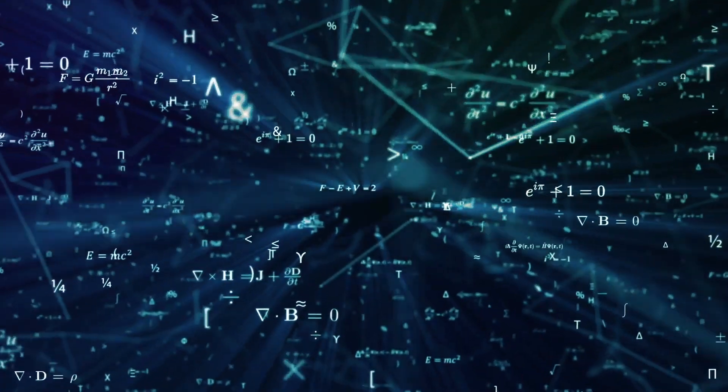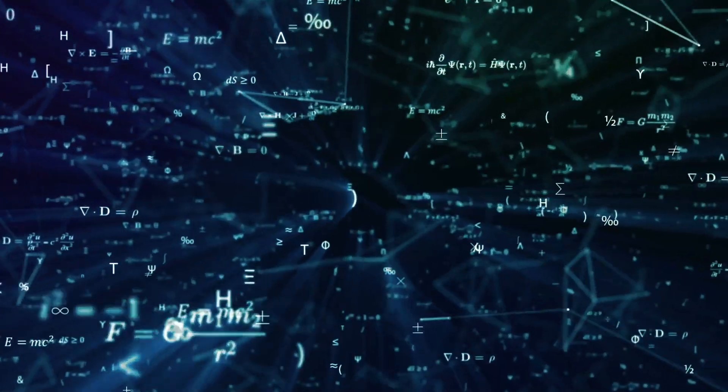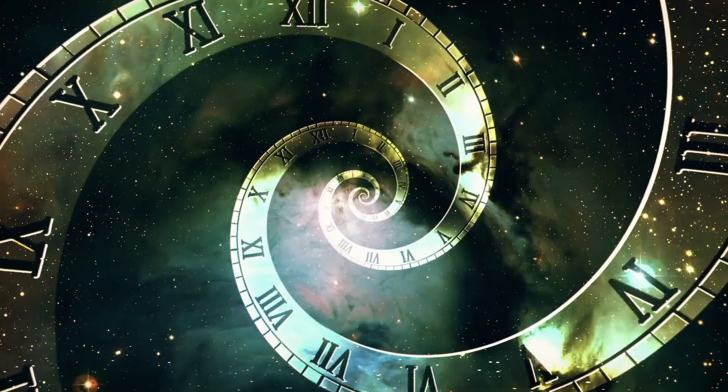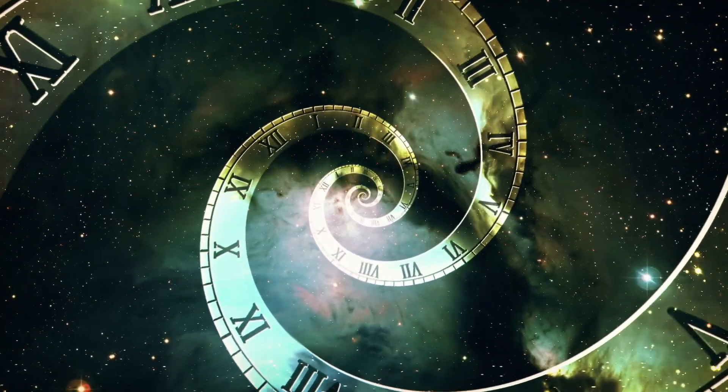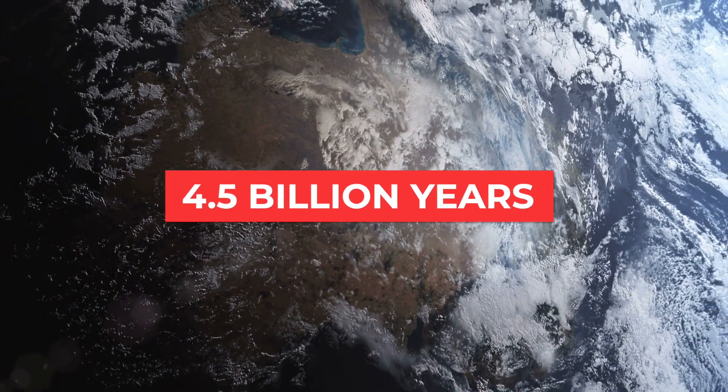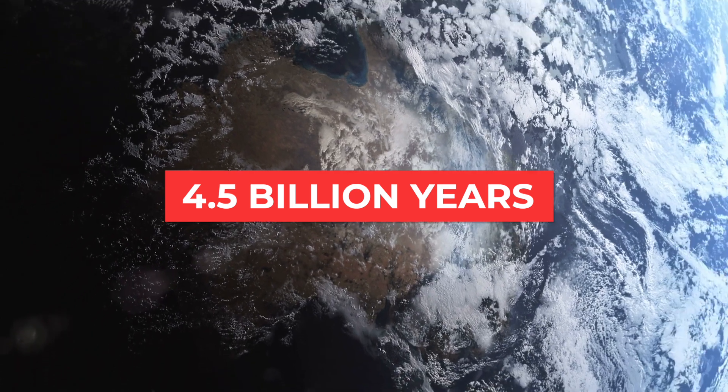In order to understand how the theories work, it is first necessary to take a look at the current state of research into the origin of the Earth. How old our planet is, is still disputed. The scientific consensus, however, is that about 4.5 billion years ago, the planet was formed into the way it is today.